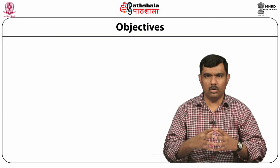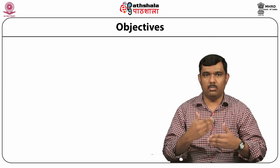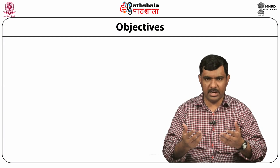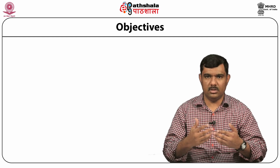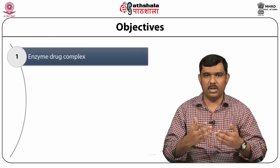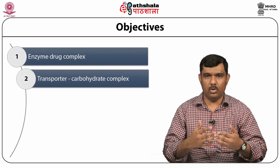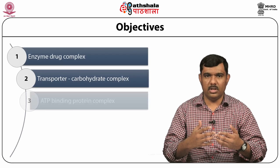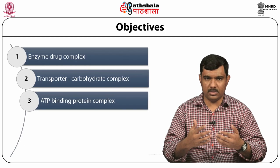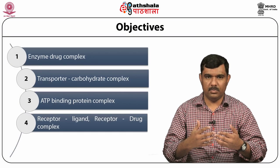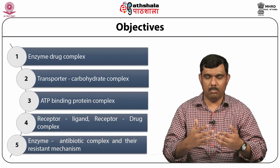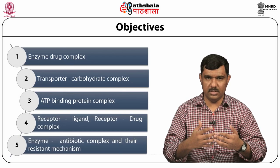This model will discuss the knowledge gained from the structure of protein-ligand complexes, such as the mode of ligand interactions, specificity of ligand, and protein recognition for specific ligands or substrates. For example: enzyme-drug complex, transporter-carbohydrate complex, ATP-binding protein complex, receptor-ligand/receptor-drug complex, enzyme-antibiotic complex and their resistant mechanisms.